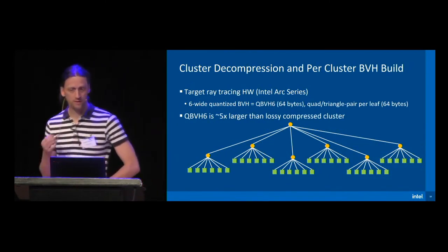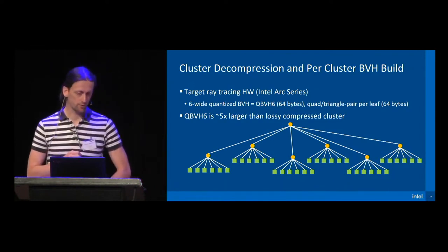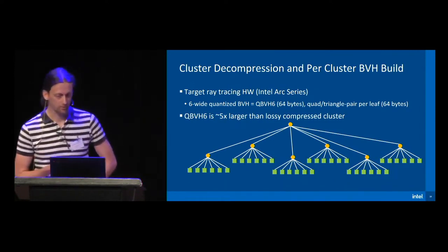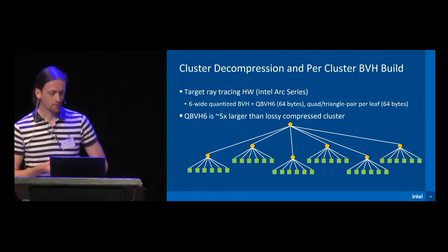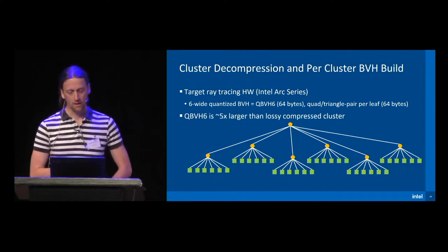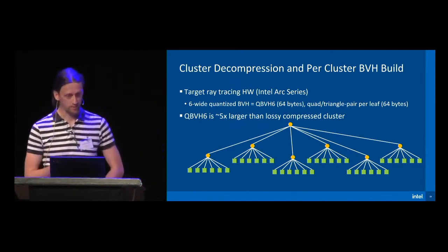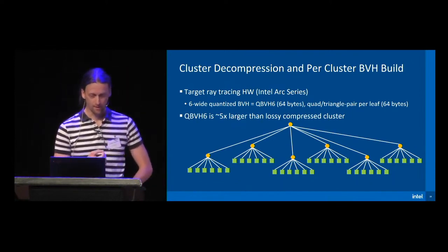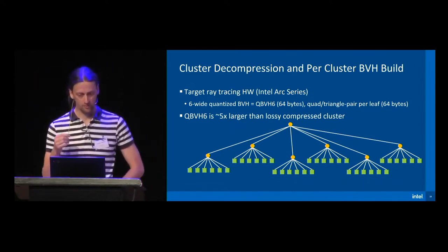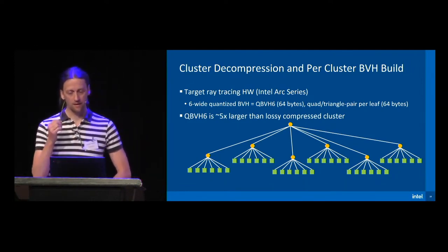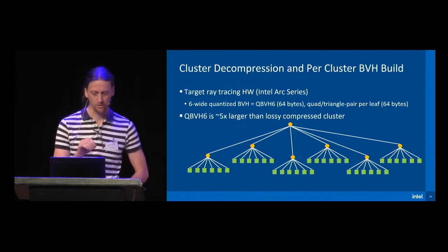Before looking at cluster decompression and the per-cluster BVH build in detail, a few words on our GPU target architecture. Our target is an Intel Arc GPU, and the underlying ray tracing hardware unit uses a six-wide quantized BVH — which we call QVH6 — as an acceleration structure. An inner QVH6 node requires 64 bytes, and a leaf node, which stores uncompressed triangle pair / quad data, requires 64 bytes as well. Six-wide was the maximum width we could squeeze into 64 bytes. One important point is that the QVH6 representation is roughly 5x larger than the lossy compressed cluster representation, so there is a memory expansion when converting from clusters to QVH6.